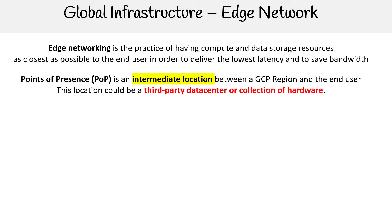A POP is an intermediate location between a GCP region and the end user. This location could be in a third-party data center, or it might just be described as a collection of hardware — so maybe it's not even a data center at all.